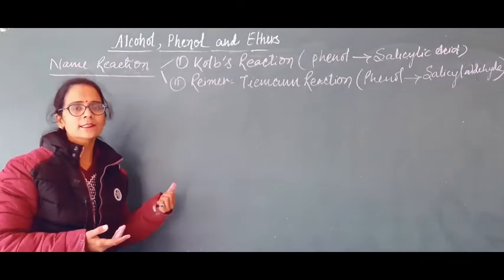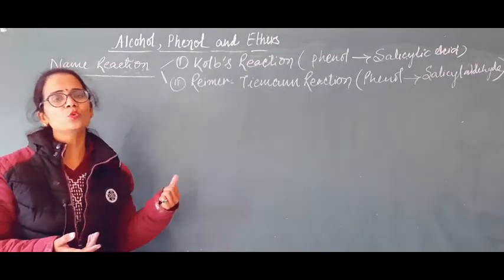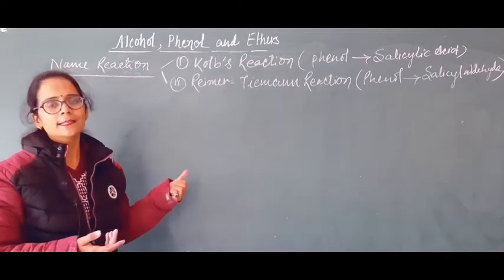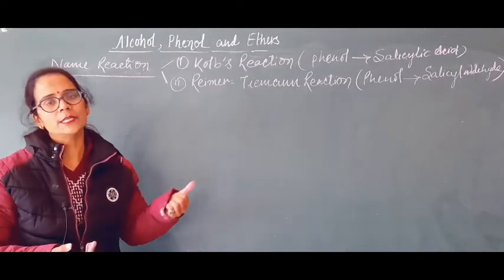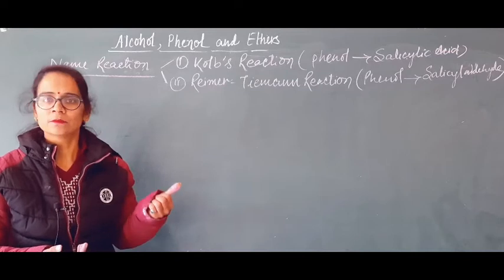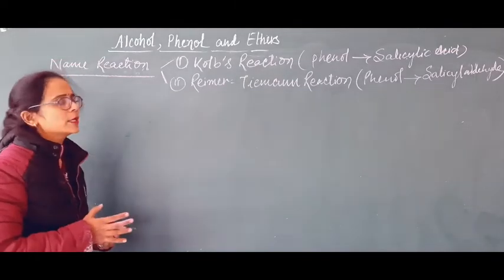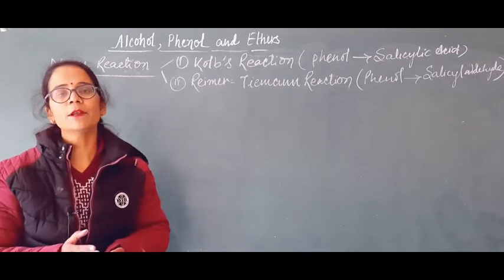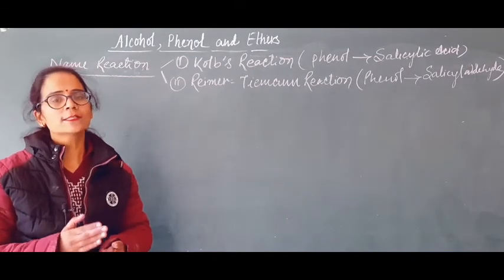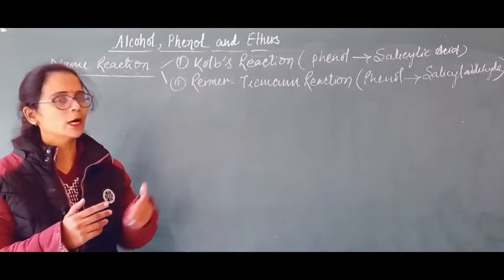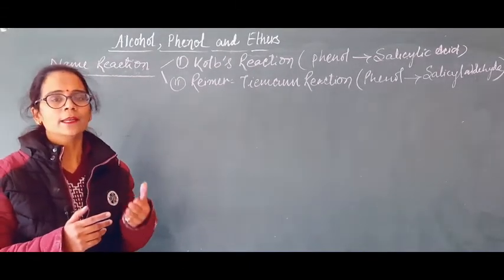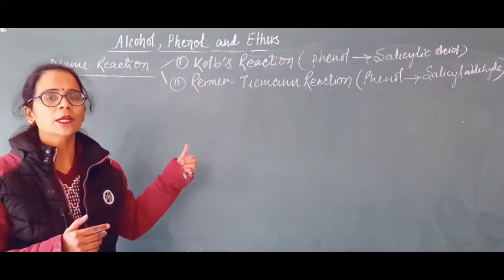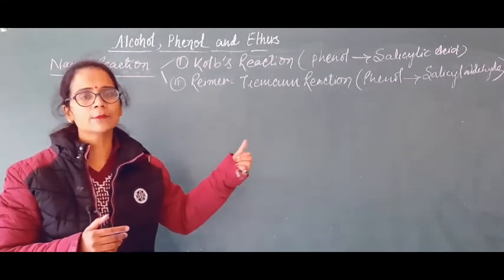The IUPAC name of salicylic acid is 2-hydroxy benzoic acid, and salicylaldehyde is 2-hydroxy benzaldehyde. Both reactions start from phenol as the reactant. In Kolbe reaction, phenol gives salicylic acid; in Reimer-Tiemann reaction, phenol gives salicylaldehyde.